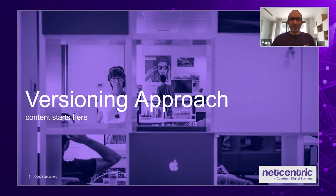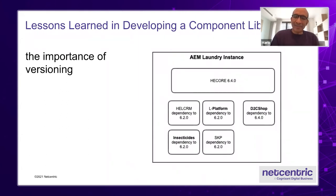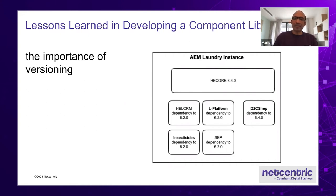Now we're going to go into versioning. To give you an idea of our ecosystem, we have one Author instance with six consumer projects — big projects like Laundry, Beauty, the best brands. They all use a library, in this case the HECOR library. As you can see in the box to the right, they have different versions. One important rule of versioning is that any version we release cannot have a breaking change — it must be backwards compatible. If we deploy in the same AEM instance, the highest version will always override the other ones.